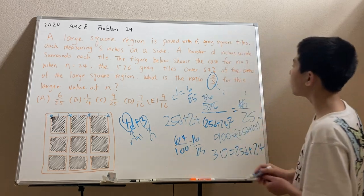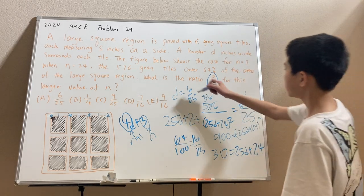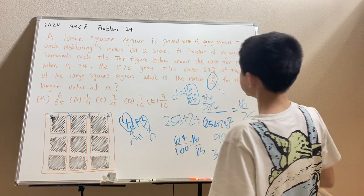And remember, since s equals 1, that's going to be our answer. So, the answer is going to be choice A, 6 over 25.